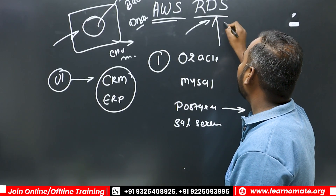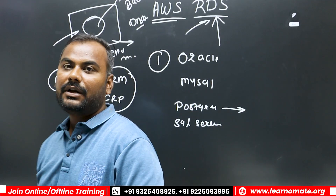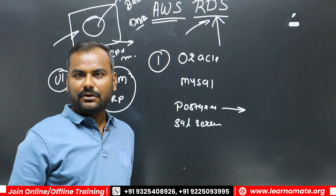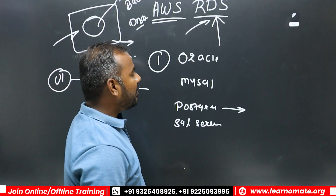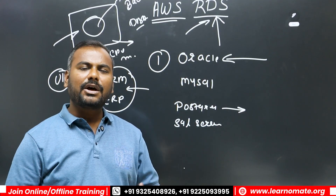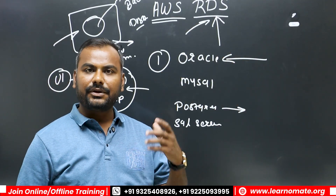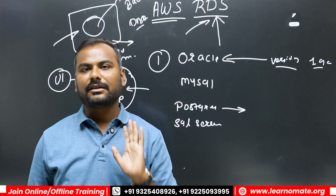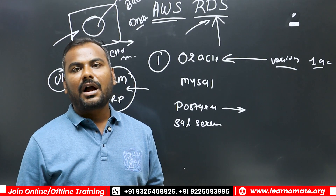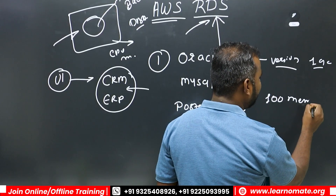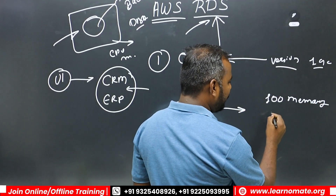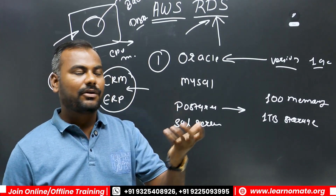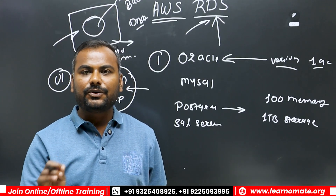This is where AWS RDS plays an important role. It manages most of your database-related services. You have options to select which database you want to install. For example, if you need Oracle database for an ERP application, you don't need to download any setup. Just go to AWS RDS, select the database and version — say Oracle 19c — and you can install it within seconds. You can also allocate 100 GB of memory or one terabyte of storage without going to the market to purchase hardware.